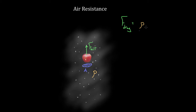So bigger area means bigger drag force, and it's approximately also proportional. If you double this cross-sectional area, you double the drag force. What's something else this drag force will depend on?